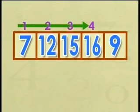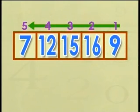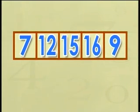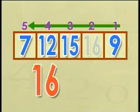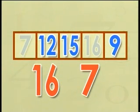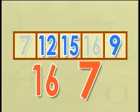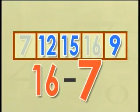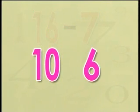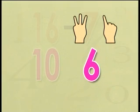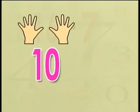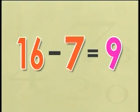Find the difference between the 4th number from your left and the 5th number from your right. Let's start by finding the numbers. Finding the difference means taking away the smaller number from the bigger number. So 16 minus 7. 16 is 10 and 6. We hold 10 in our head. We have 6. We count: 1, 2, 3, 4, 5, 6, and from 10 we close 1 more finger, and that leaves us with 9. So 16 minus 7 is 9.